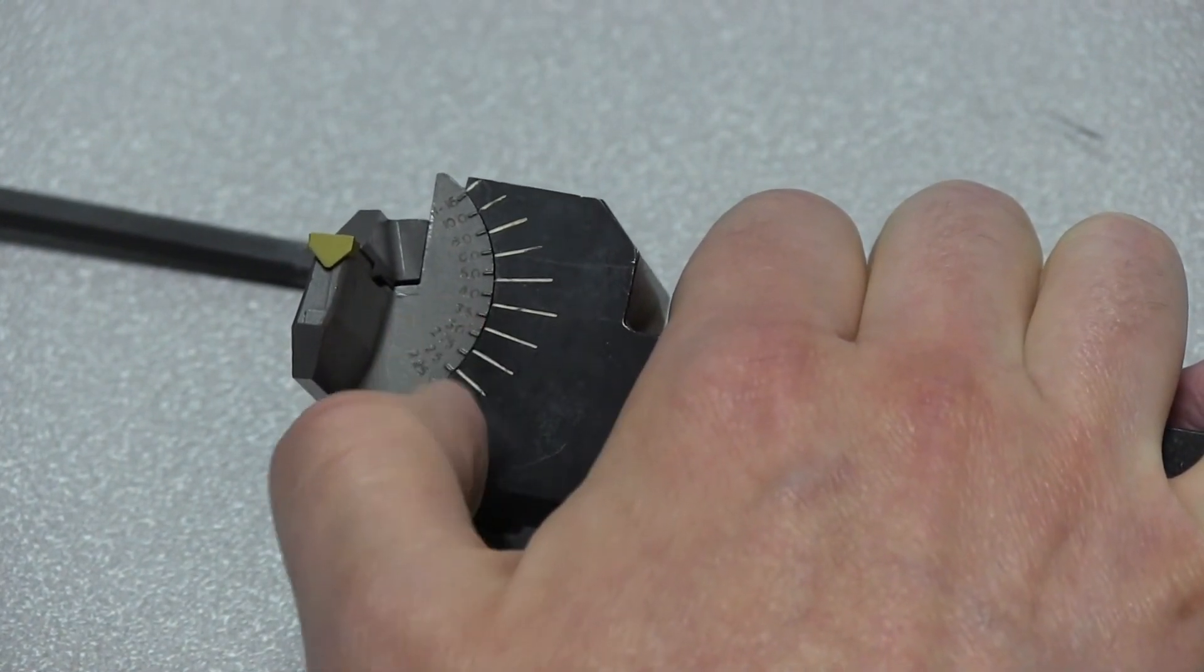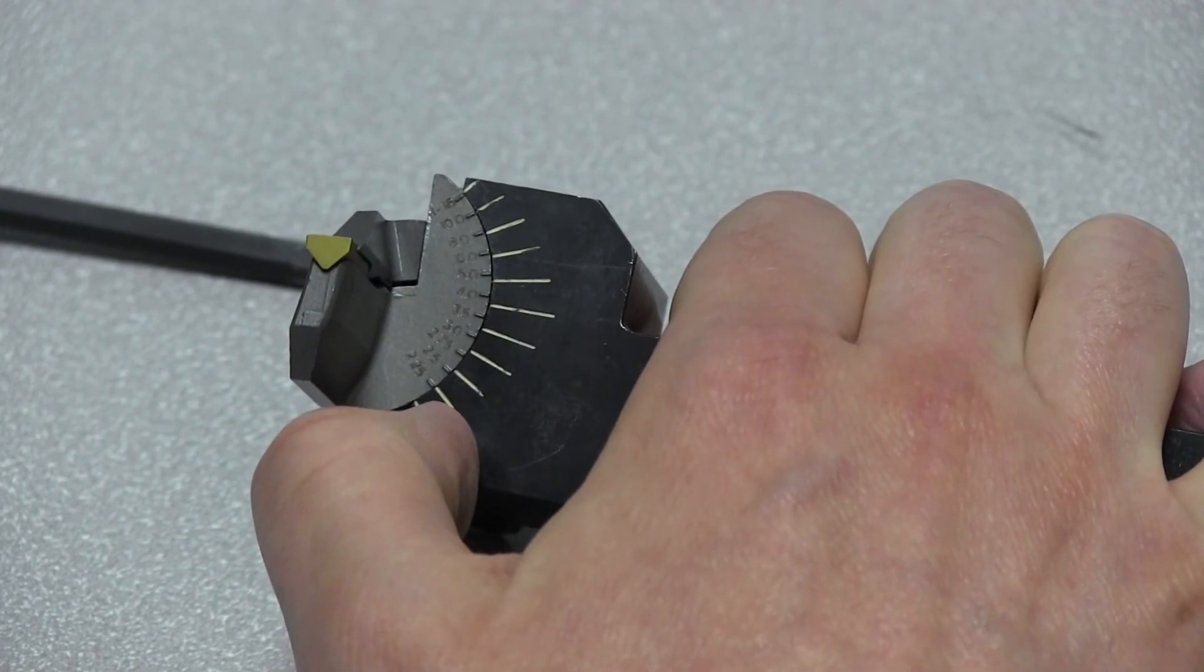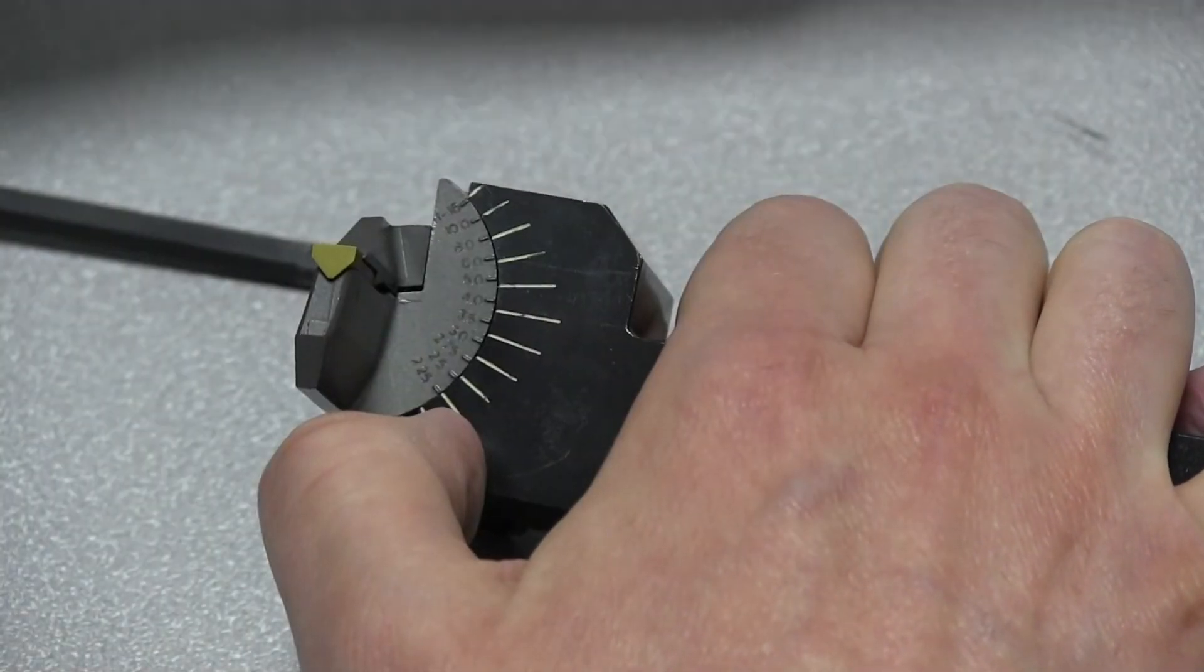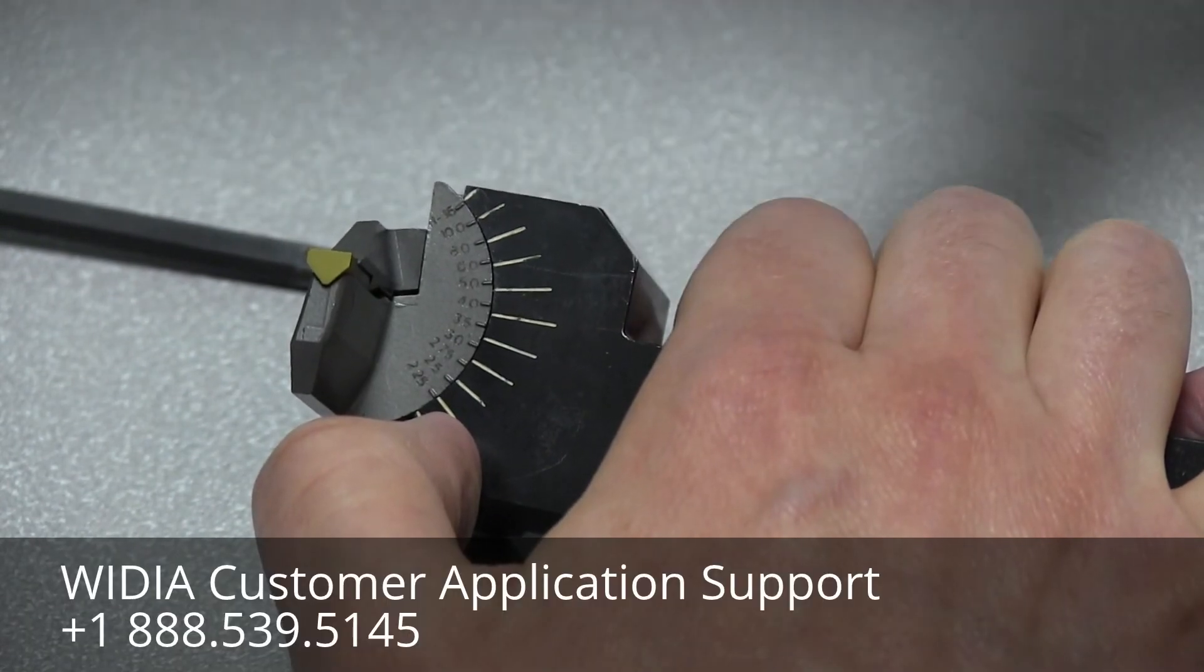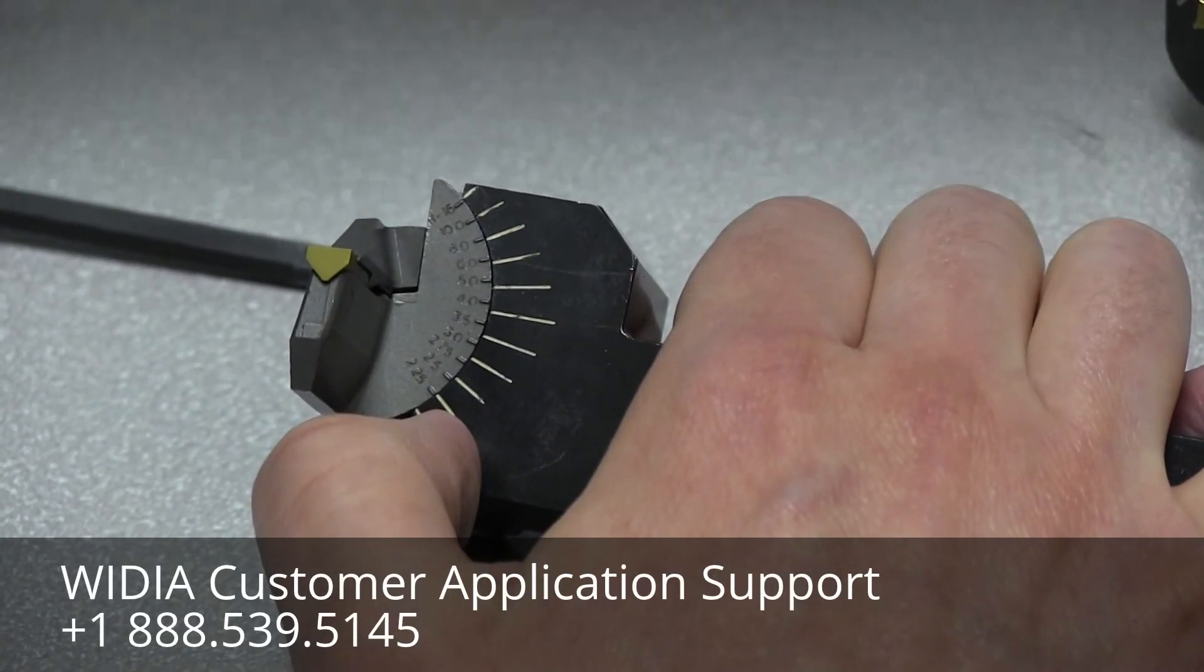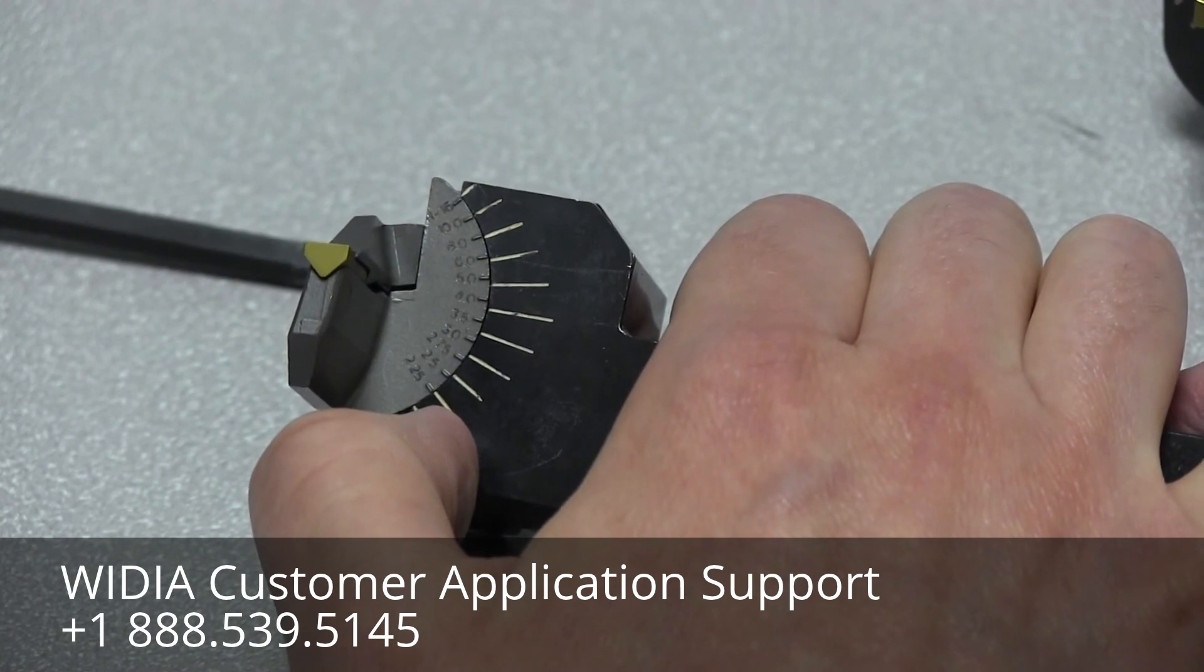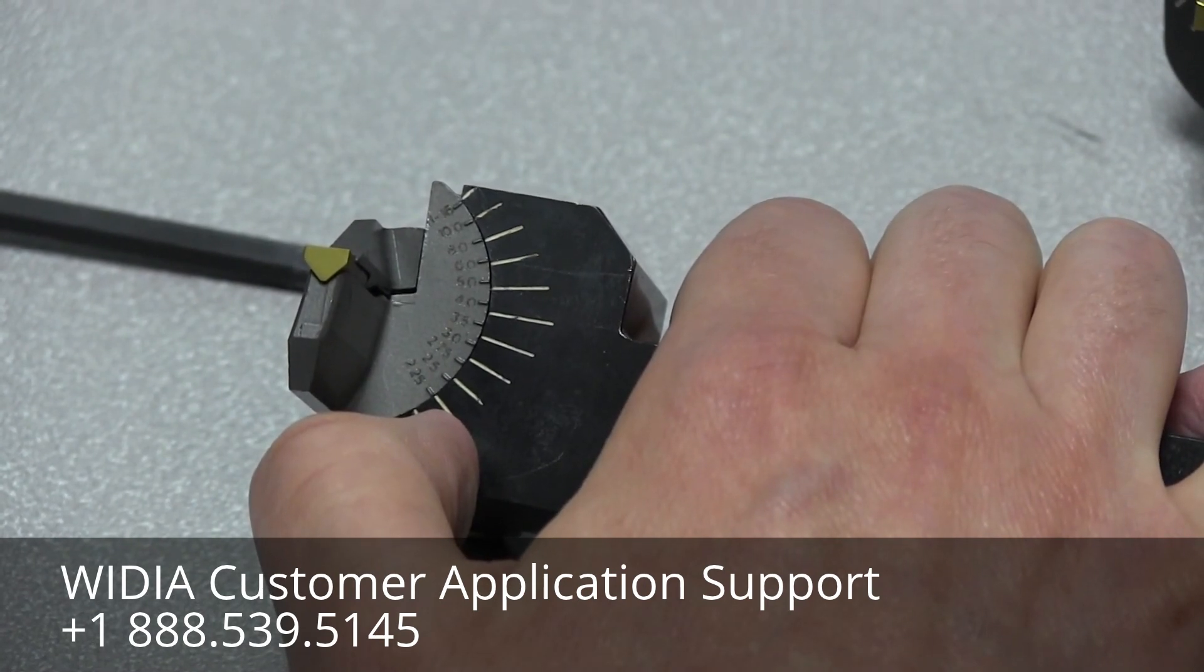If you have any additional questions on the Rangers, we also have the round shank Ranger as well. It adjusts the same way, it's got the same diameters on here and lines. Please give us a call on our customer application support line at 1-888-539-5145. Thank you.